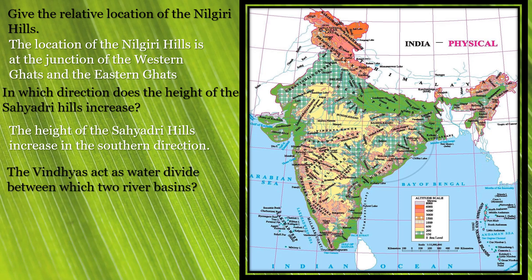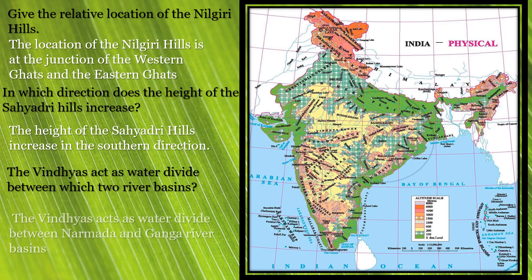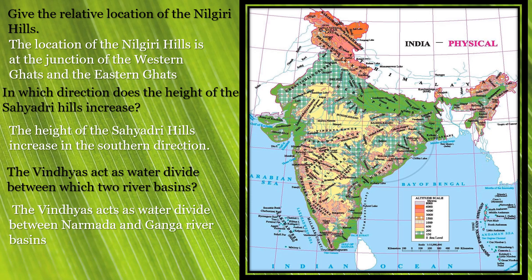Next question: the Vindhyas act as a water divide between which two river basins? To the north of the Vindhya range we have the Ganga river basin, and to the south we have the Narmada river. So the Vindhya range acts as a water divide between the Ganga river basin in the north and the Narmada river basin in the south.